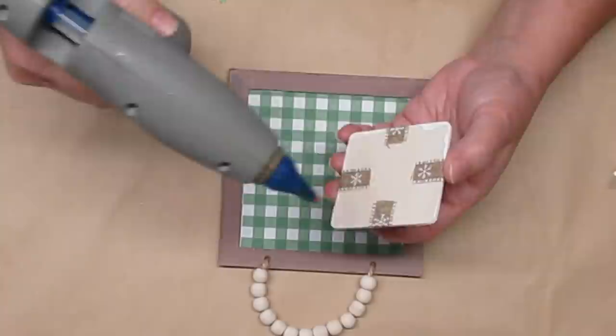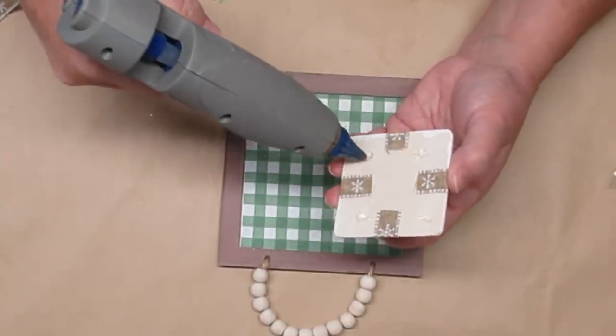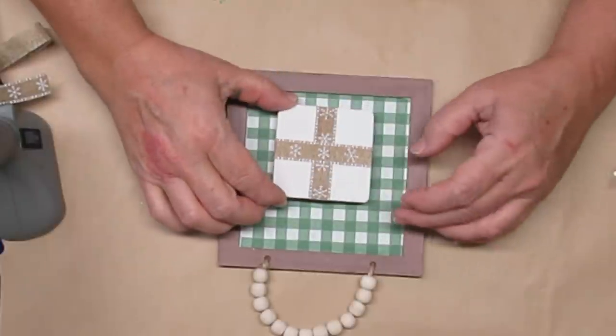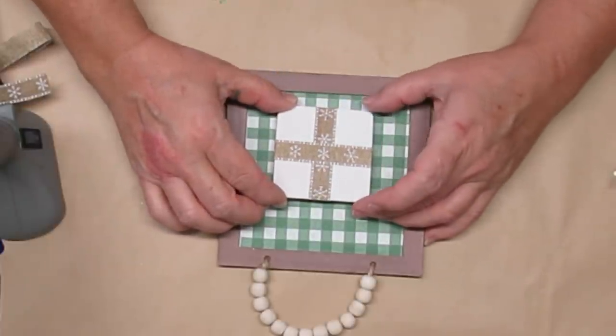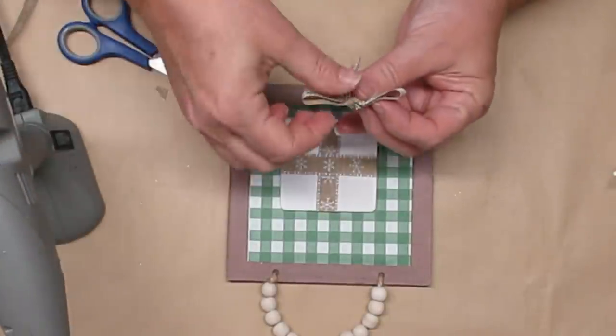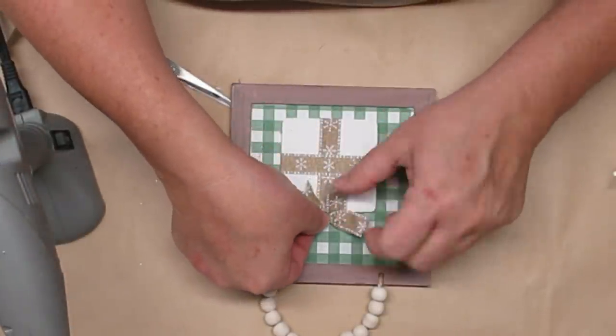Now I'm simply going to glue the present onto the sign. Once that's done I'm just going to make a shoestring bow with a little bit more of the ribbon and glue it onto the top of the present and this turns out super cute and so easy to do.